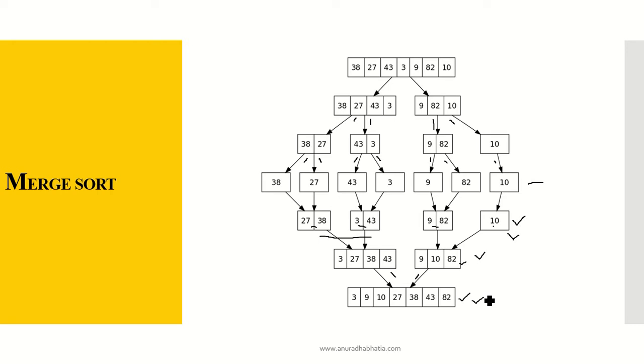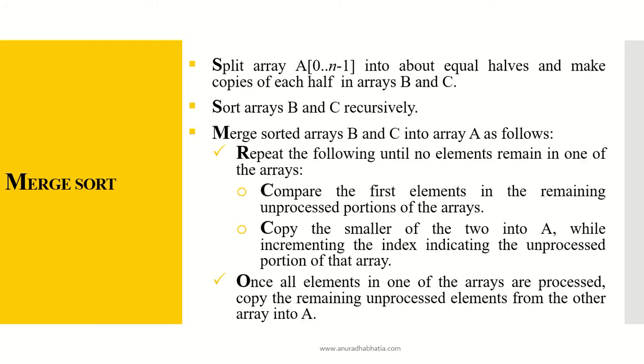We split the array A[0 to n-1] into about two equal halves and make copies of each half in array B and C. Sort arrays B and C recursively. Merge the sorted arrays B and C into an array A as follows.